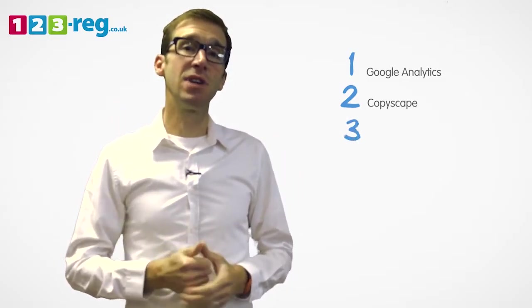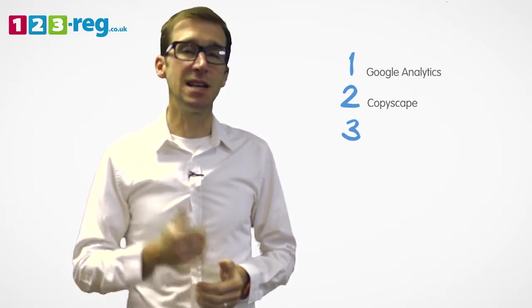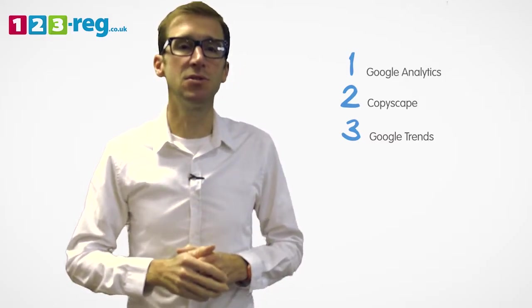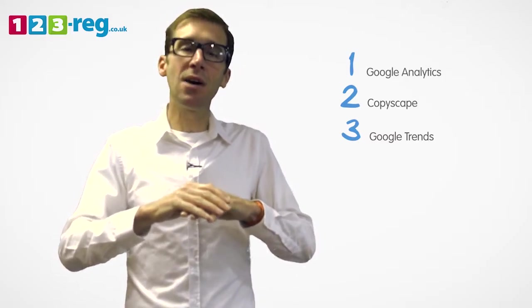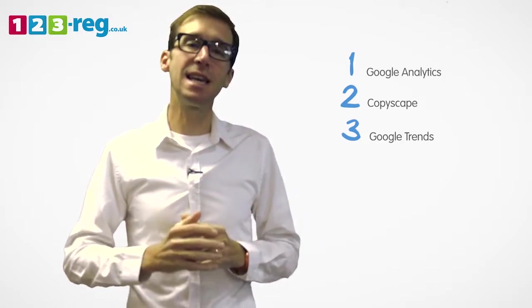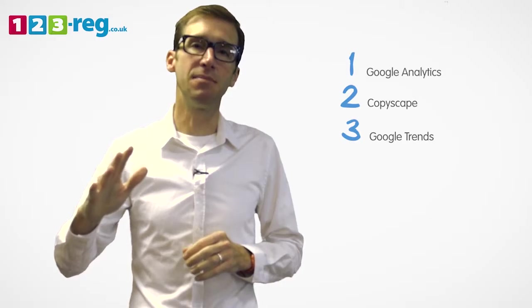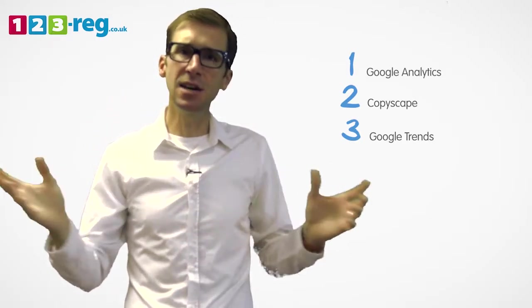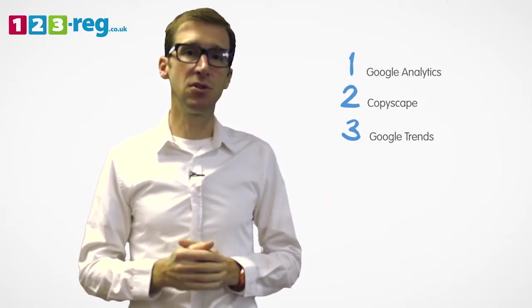So the third great SEO tool is another one from Google. It's Google Trends. You may have heard of this one, but it's a really powerful tool. It shows you how the number of searches for particular keywords changes over time, whether something is becoming more or less popular. The data goes back quite far, all the way back to 2004.